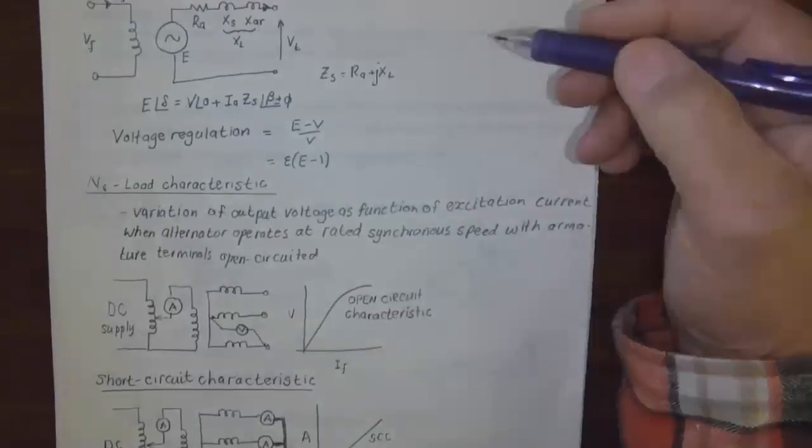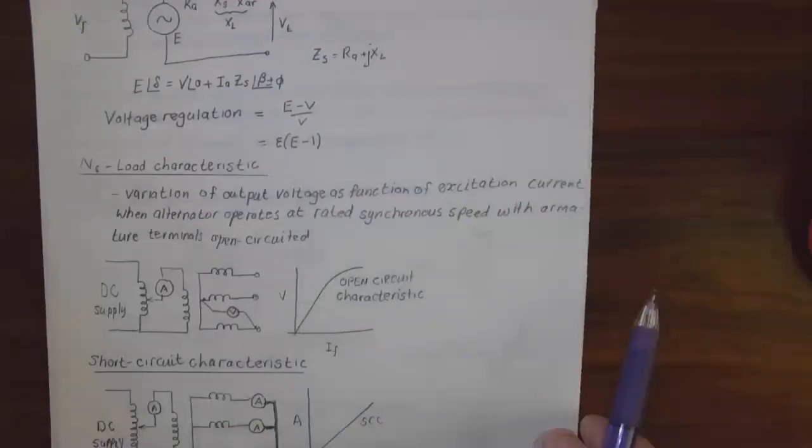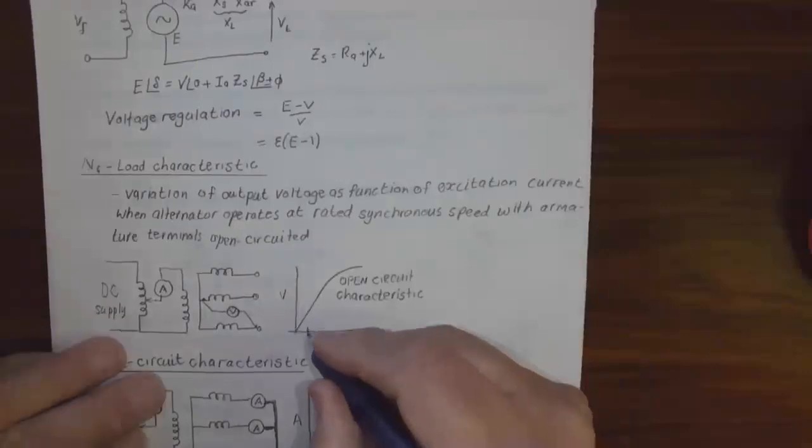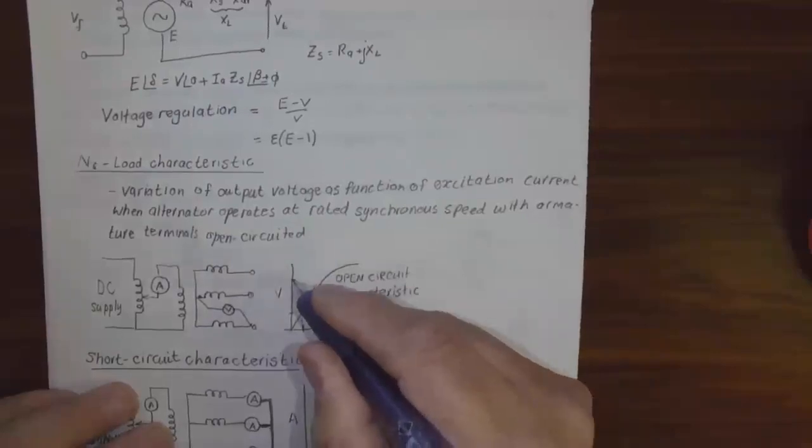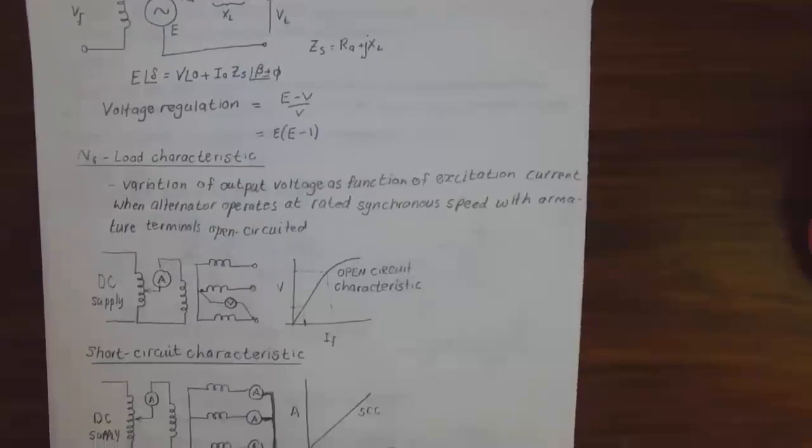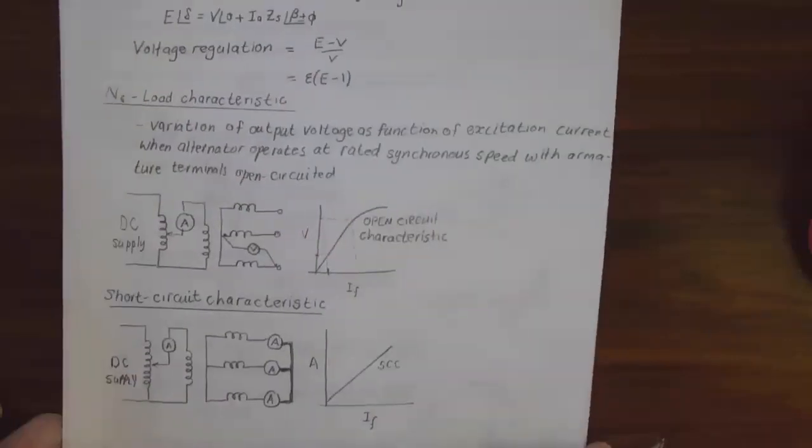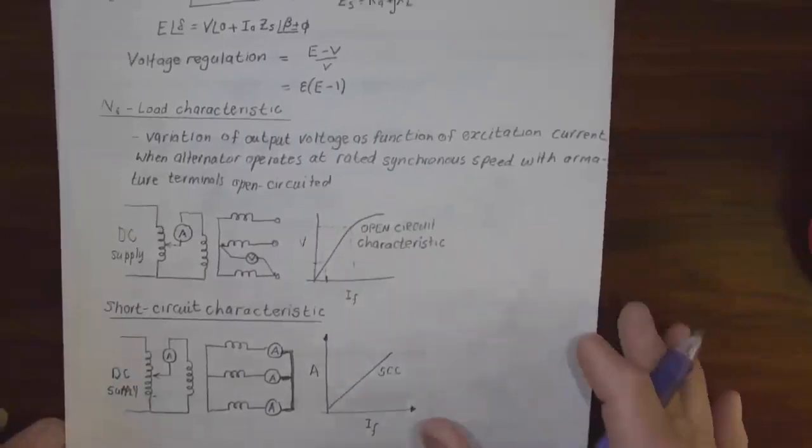The no load characteristic is a variation of the output voltage as a function of the excitation current when the alternator operates at rated speed with armature terminals open circuited. It's like the same as a DC machine: you've got your excitation current and the induced EMF for that specific current until you reach the end of your straight line, and then it becomes not constant anymore. The short circuit characteristic is with the terminal short circuit, machine running at synchronous speed. We start from zero with the excitation and increase it till maximum. So we've got armature current against the field current.